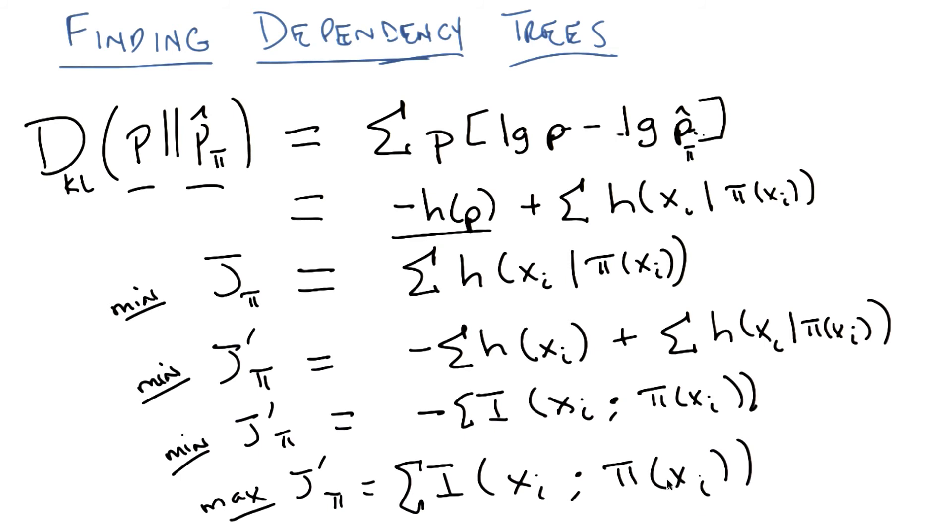And that's the same thing as trying to maximize the mutual information, the sum of the mutual information between every feature and its parents. And again, I think that makes a lot of sense. The best dependency tree is the one that captures dependencies the best. So now we need to figure out how to do that optimization. Exactly right. And it turns out it's gloriously easy.